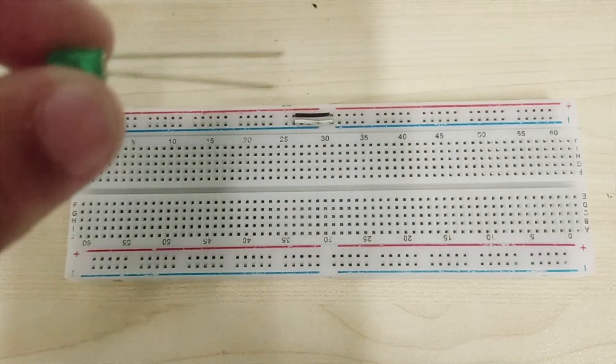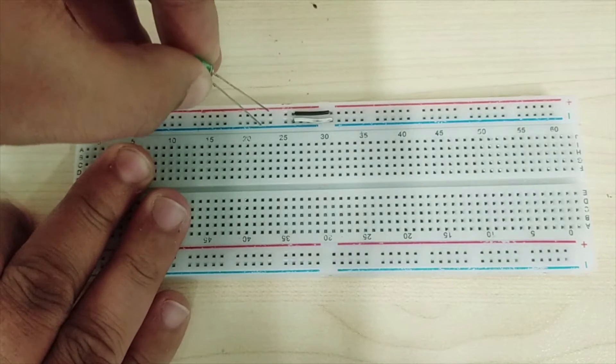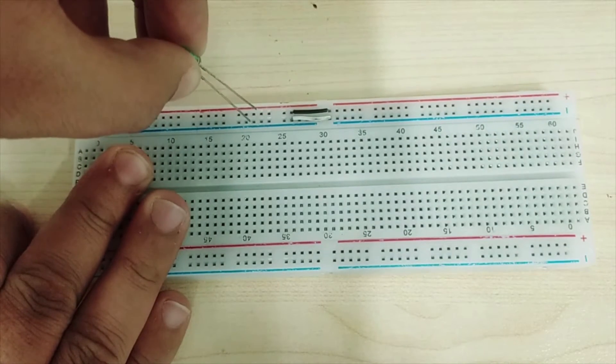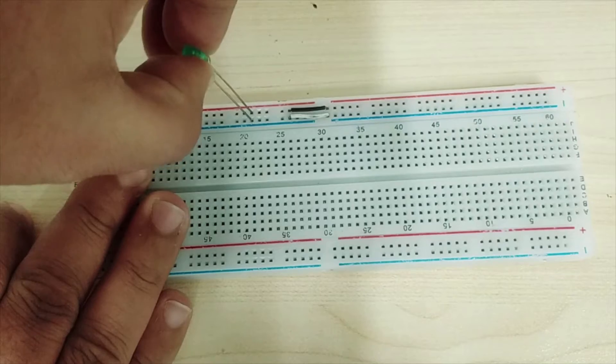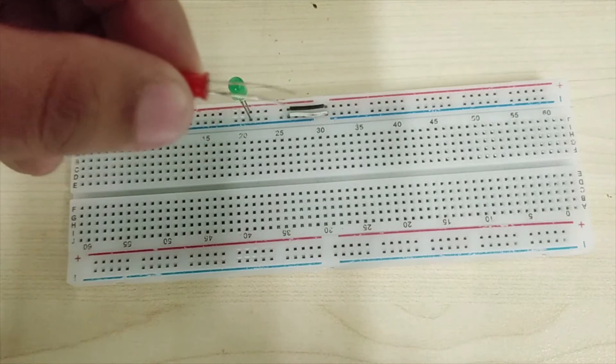Hi, welcome to my YouTube channel. So first of all, we will take a green LED and connect the anode of the green LED with the positive terminal of the breadboard and the cathode with the negative terminal of the breadboard. Now we will take a red LED and connect in the same way.